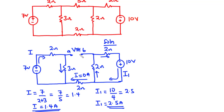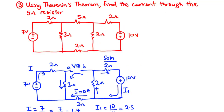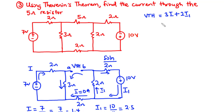Now at this point we can find the value of Vth. Taking the anti-clockwise direction for Vth, the current flowing through the 3 ohms resistor is flowing in the anti-clockwise direction, in line with the direction we took for Vth, so that becomes positive: 3 times I. We have no current in the open branch, so we can ignore that. The current flowing through the 2 ohms resistor is also in line with the anti-clockwise direction, so that is also positive: 2 times I1.